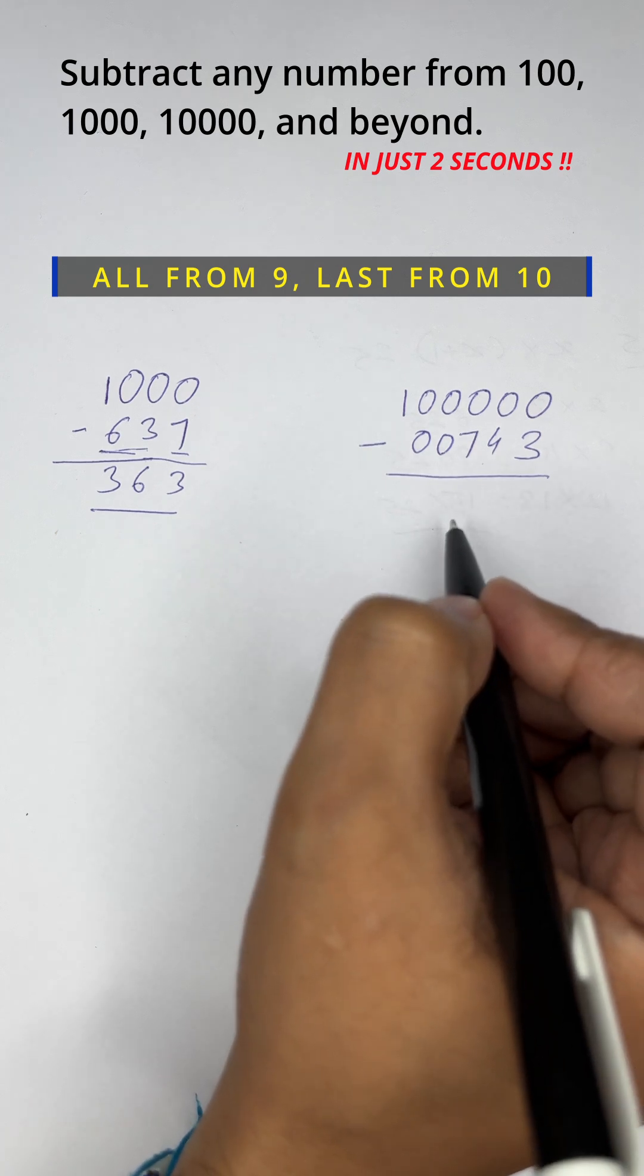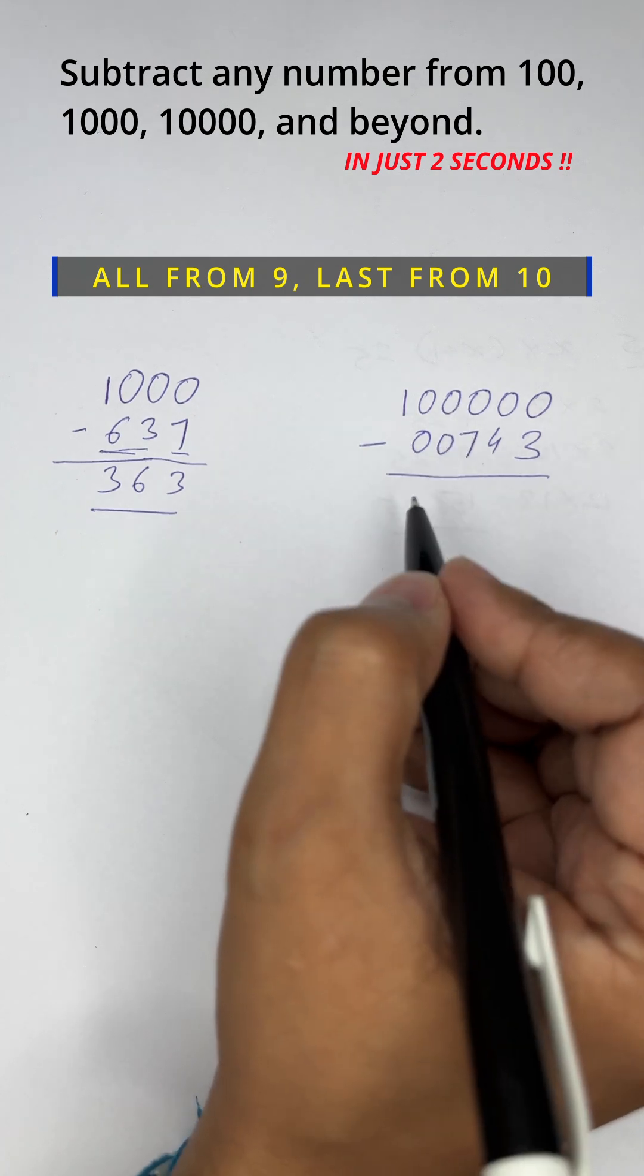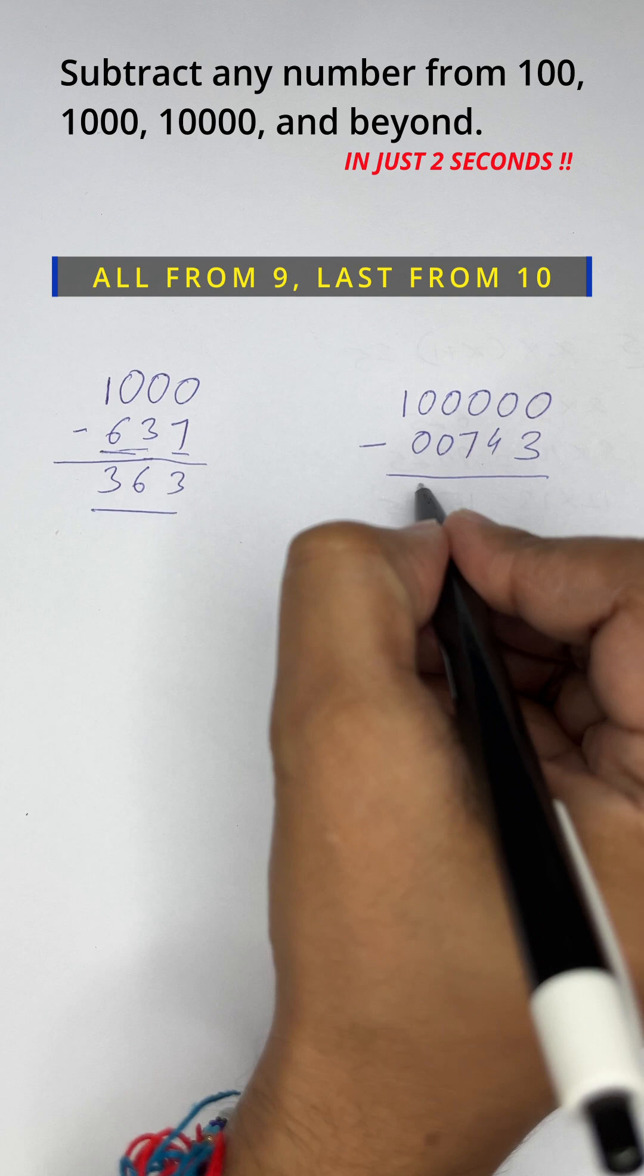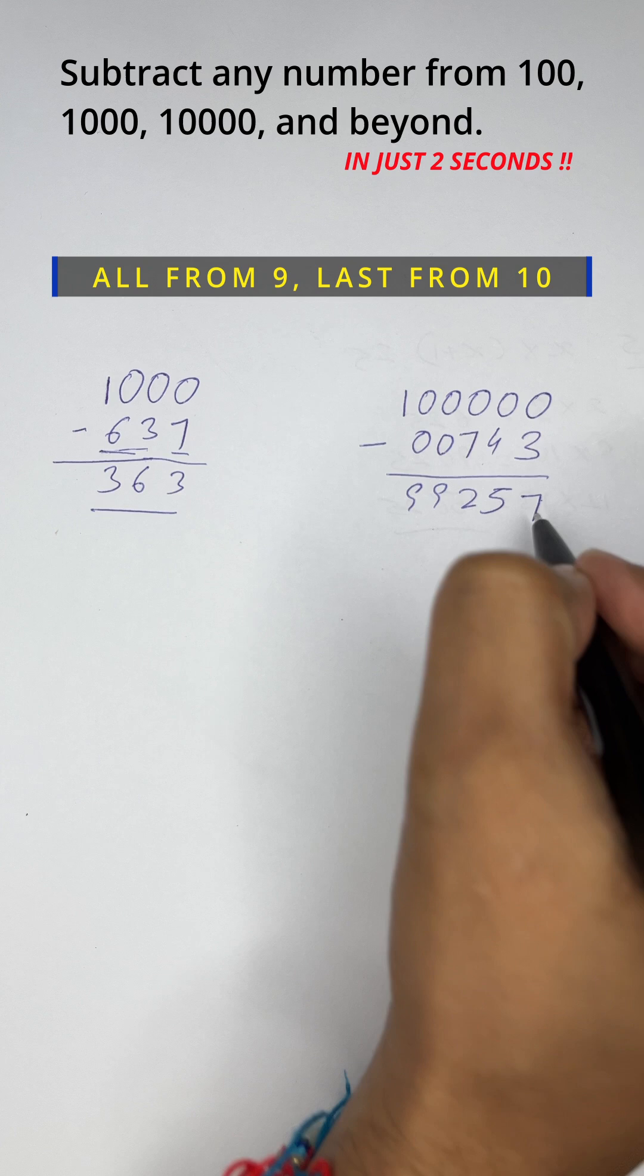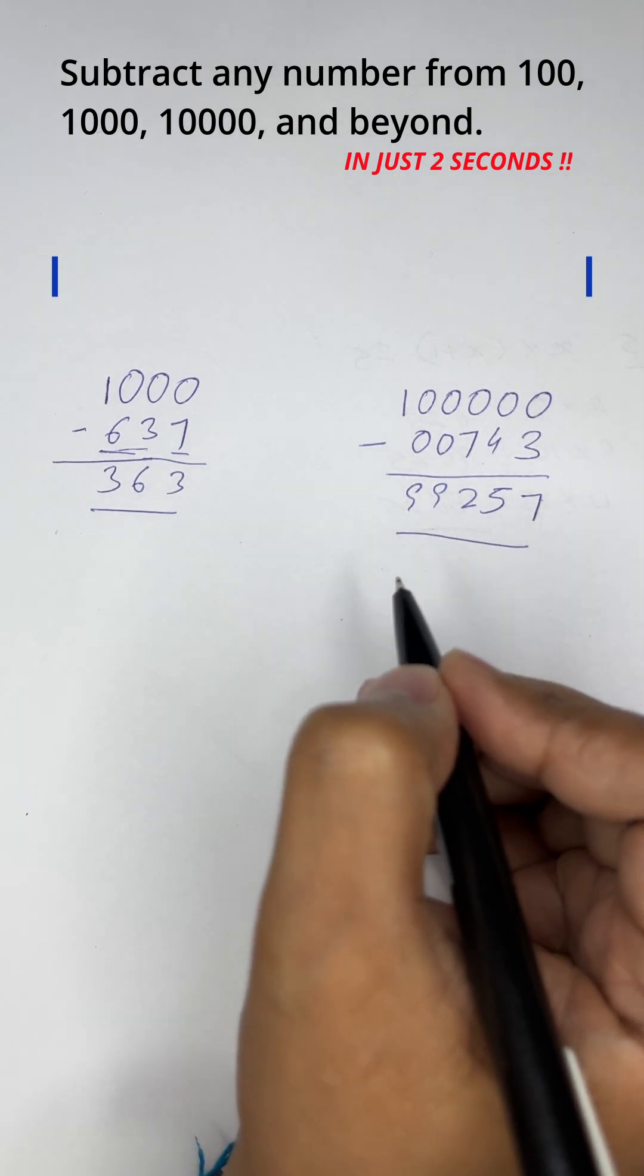Now apply the same rule: all from 9, last from 10. So we get 9, 9, 9 minus 7 is 2, 5, and 10 minus 3 is 7. So this is the answer: 99257. Can it get any easier than this?